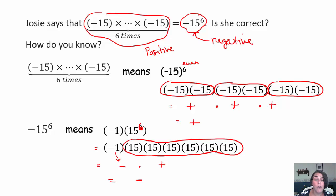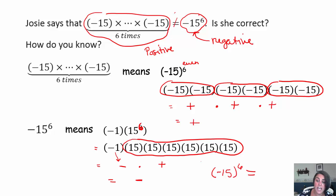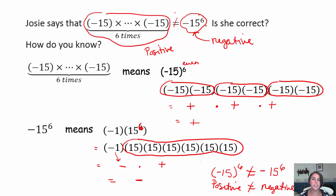If one answer is positive and the other is negative, they certainly are not equal — positives and negatives do not equal one another. So our first expression really means negative 15 to the 6th, and that is not the same as negative times 15 to the 6th. One answer will be positive and the other will be negative. You show the mathematics and then explain — they don't have a shot at being equivalent.